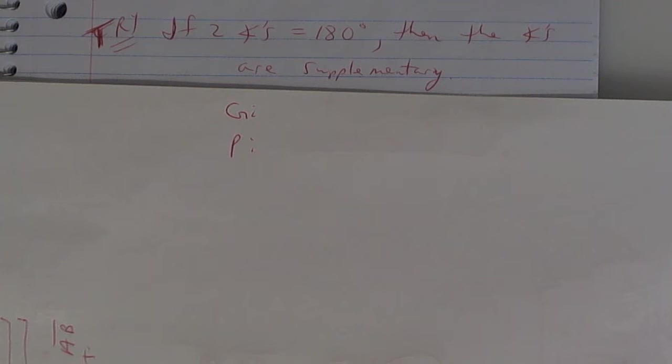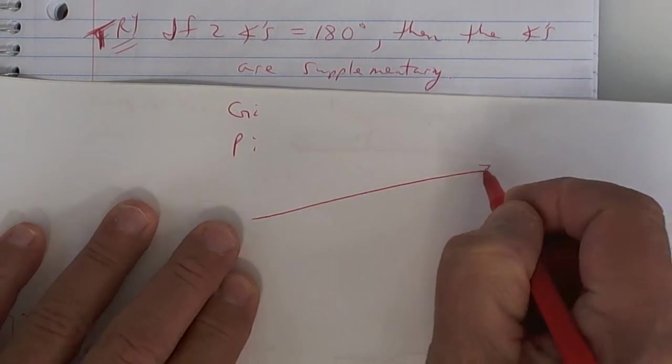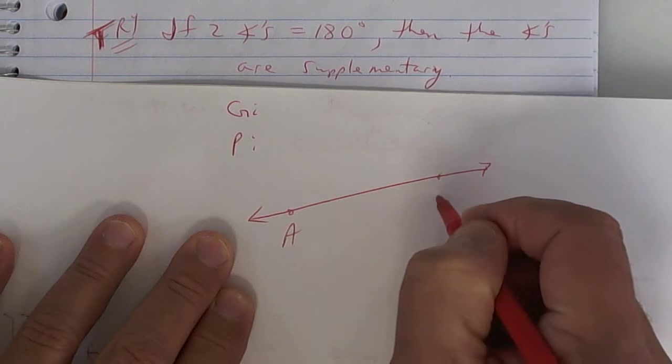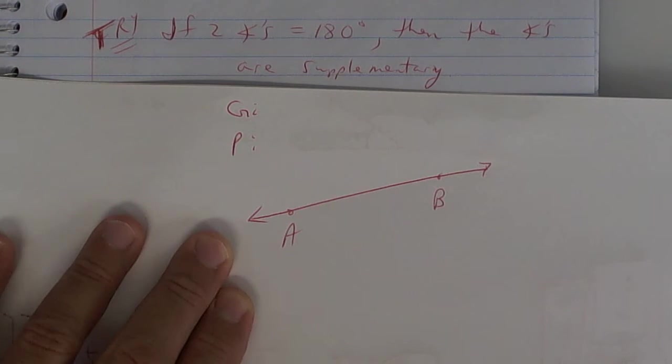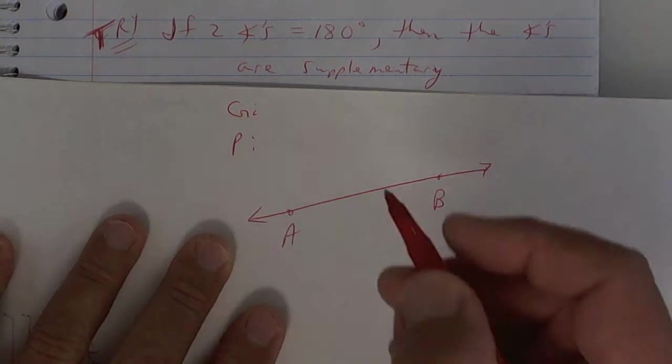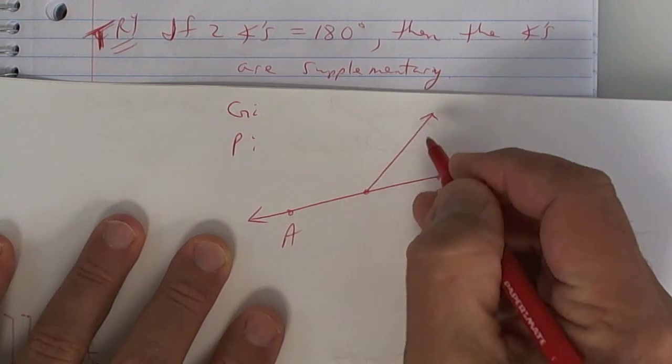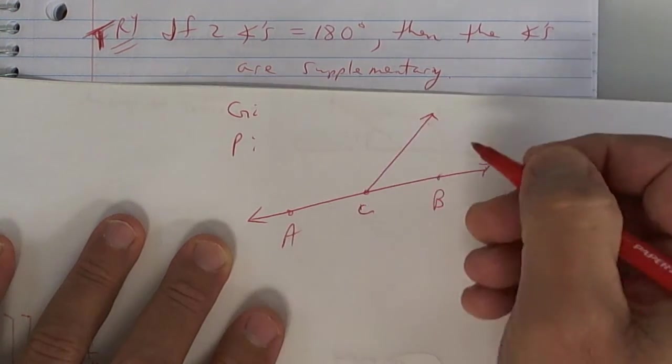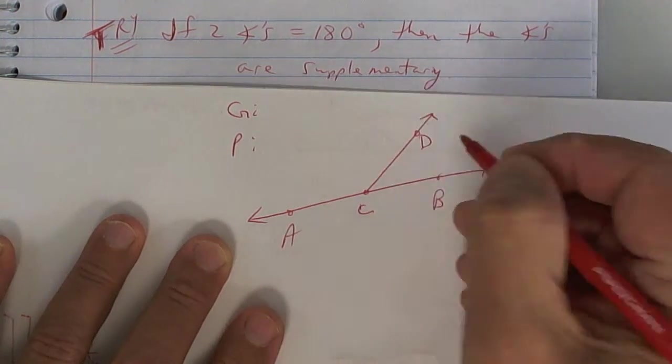All right, let's go. I'm going to read it for you. If two angles add up to 180 degrees, then they are supplementary. Now, let's go over this here. Draw a line and call it AB. Come on, guys. I know this is the last class and we're ready for the weekend. You probably have a little extra time at the end, but I need you working. All right. Now, put a ray on here and let's label it with a C and a D. Label it like that.